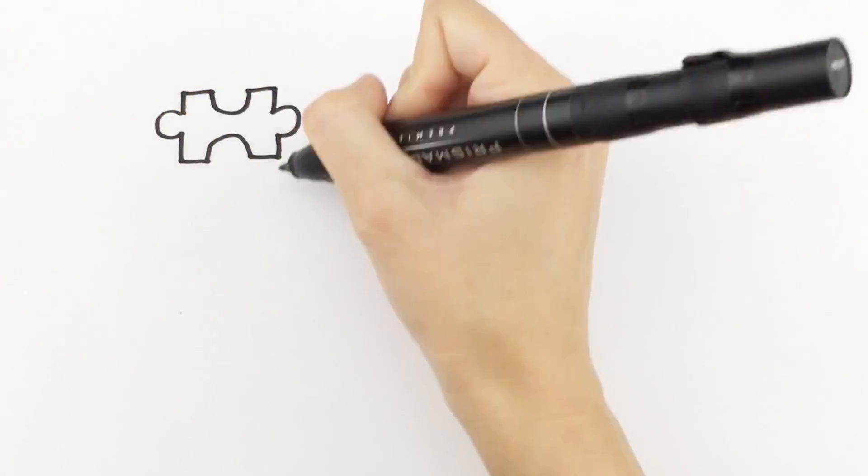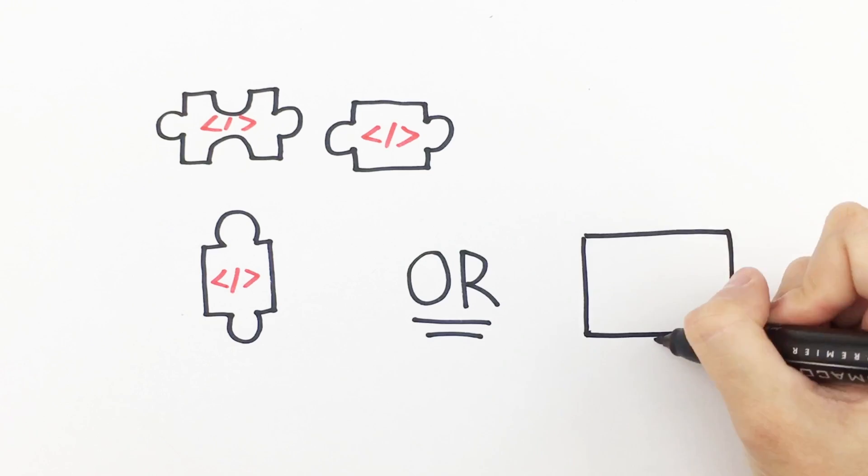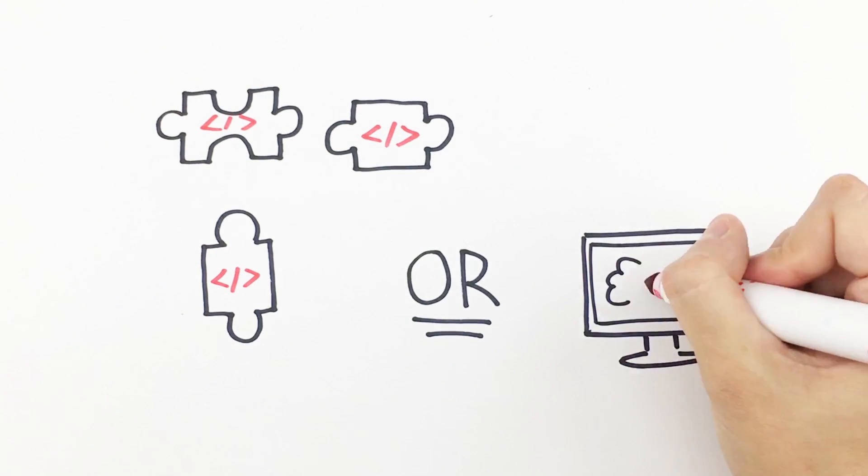Since there's no commercial offering that can do everything he needs, Pat has two choices: piece together bits of different tech products, or build something himself.